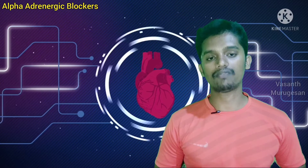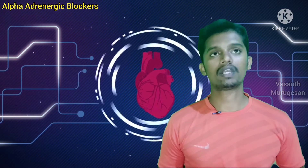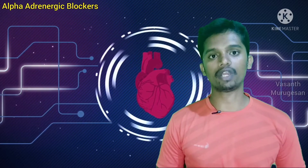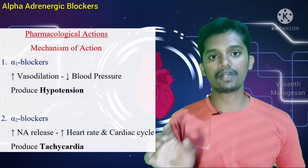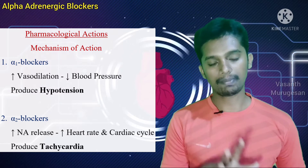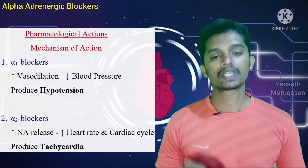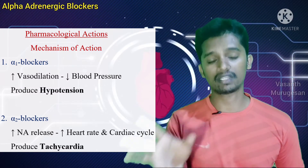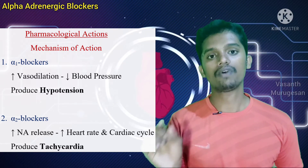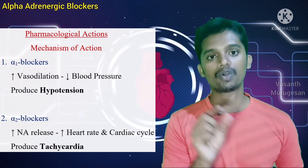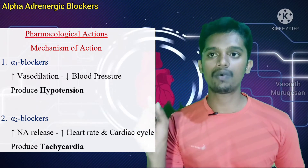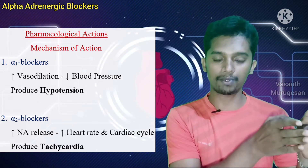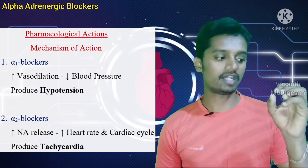Now the pharmacology of Alpha Adrenergic Blockers — first the mechanism. Alpha 1 Receptor Block: normally, Alpha 1 receptor stimulates vasoconstriction. When we block the Alpha 1 receptor, the opposite occurs — vasodilation — and blood pressure decreases, producing hypotension.